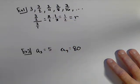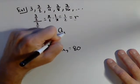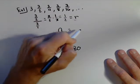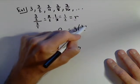Now a geometric sequence, because we're repeatedly multiplying by one half, is going to be exponential. So we have a sub n equals our first term, which is three, times one half.